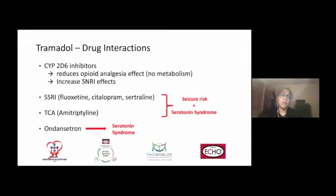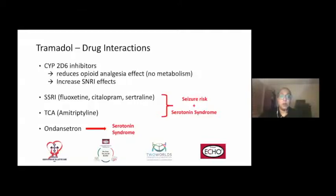In terms of drug interactions, tramadol being metabolized by CYP2D6 will be subject to inhibitors of CYP2D6. As a result of CYP2D6 inhibition, we may see reduced opioid analgesic effect because no metabolism is occurring, and we may see SNRI effects increase as well, because alternative pathways are being utilized. There is also increased risk of serotonin syndrome and seizure risk when other SSRIs or other serotonergic drugs — such as fluoxetine, citalopram, sertraline, or even fentanyl — are added into drug therapy, and that is something to be aware of.